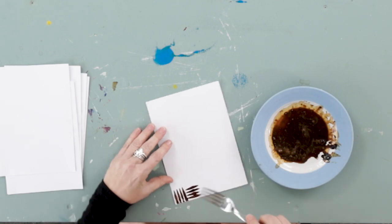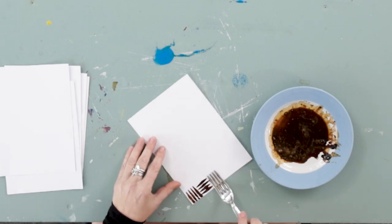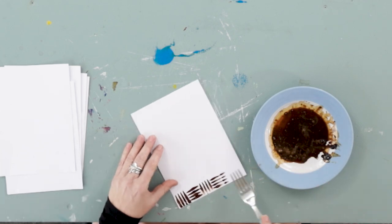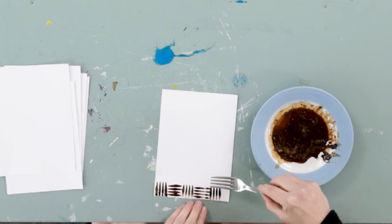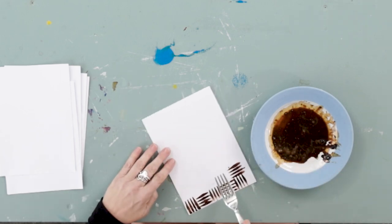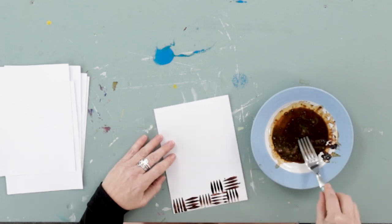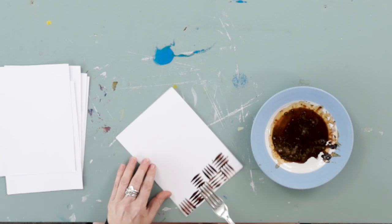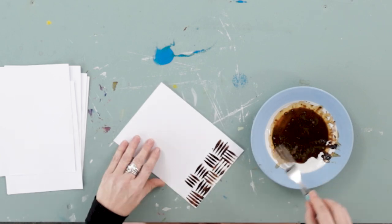Then dip your fork into the paste and we're going to do the design going across and up alternatively, and then continue that pattern, so we're creating a nice cross-hatch.